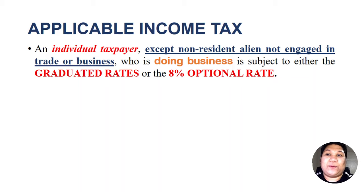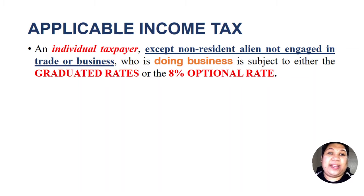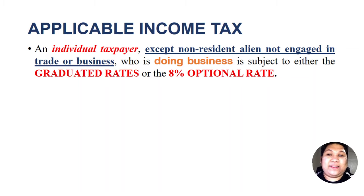In our previous video on how to compute income tax for purely compensation income earners — those considered as employees who derive income from employment — the tax rate applicable is only graduated rates. But for individual taxpayers engaged in business, their taxes could be either the graduated rates or the 8% optional rate.